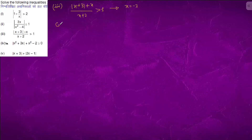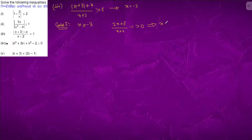We will take Case 1: x ≥ -3. It will be (2x+3)/(x+2) - 1 > 0. From here we get (x+1)/(x+2) > 0. Using the sign chart with critical points -1 and -2: x < -2 or x > -1.